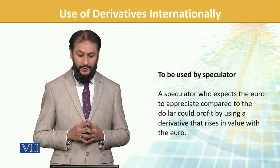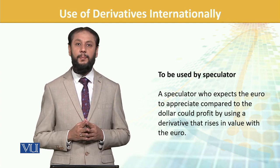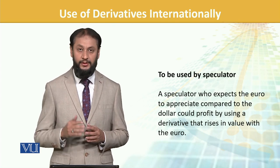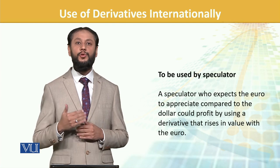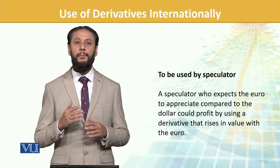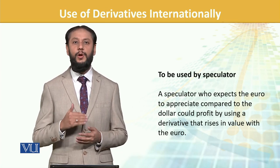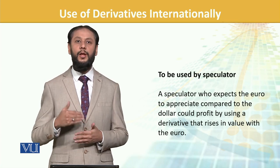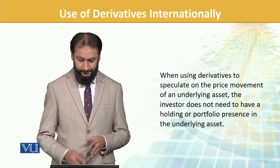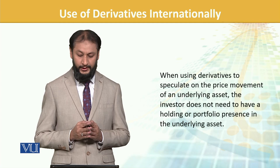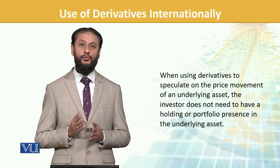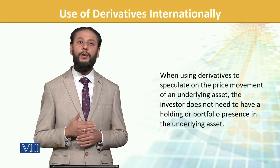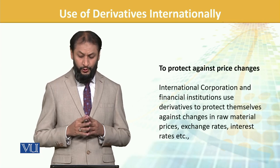Derivatives are also used by speculators. For example, if you think the euro's price is going to increase and you enter into a derivative based on the assumption that euro price will go up, you are acting as a speculator. Speculator can be a negative word, but in the derivative market if you don't have a real underlying need and enter a position to gain profit, it is referred to as speculation. When using derivatives to speculate on price movement, the investor does not need to have a holding or portfolio presence — no real euro payment or receipt is necessary. They can hold a position just to make profits.